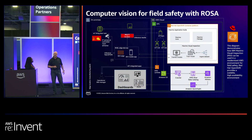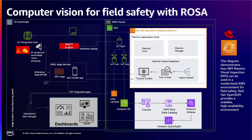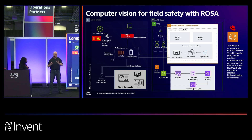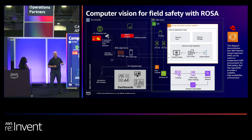The Maximo architecture has the core application running on ROSA as a managed service using operators, making it very easy to upgrade and manage. You can train deep learning models and publish them out to RHEL edge devices that use cameras to look at your assets — vehicles, mining equipment, heavy equipment. This is a very practical implementation of AI: taking a 30-year-old application and adding AI capabilities by upgrading it to a containerized delivery model.